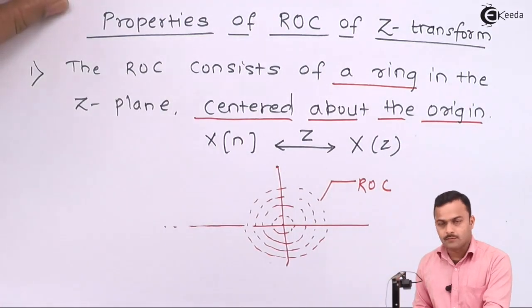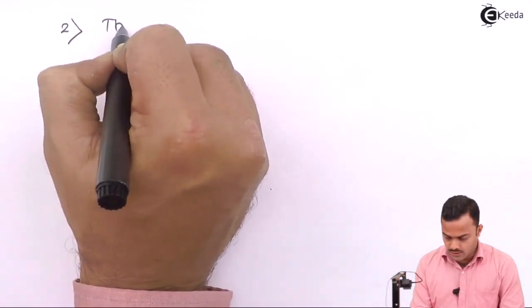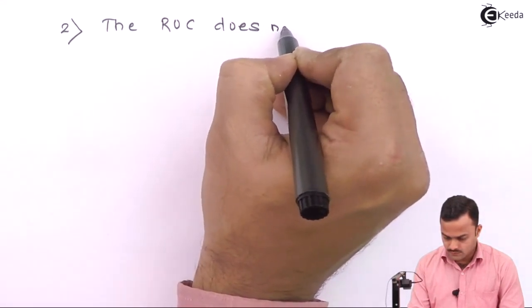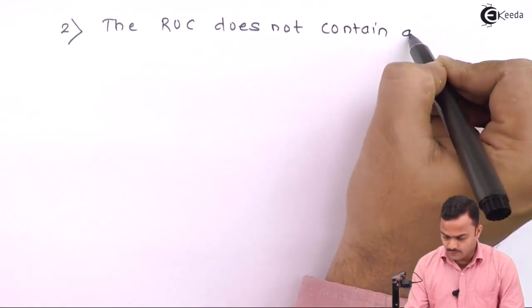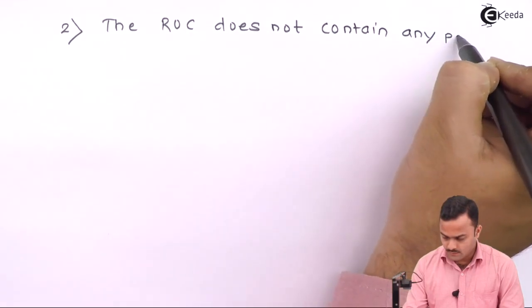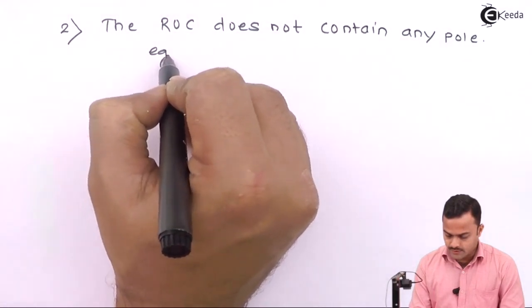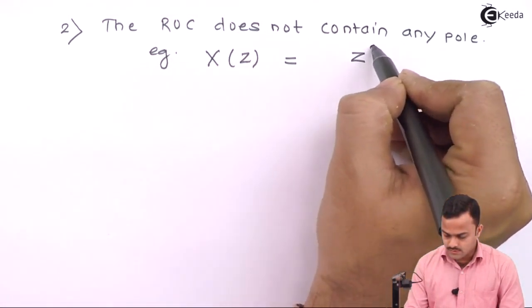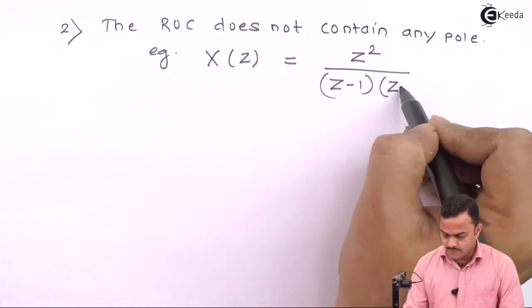Let's go to the next property, property number 2. The ROC does not contain any pole, which is quite obvious. To illustrate this, we will take a simple example: X(z) = z² / [(z−1)(z−2)].